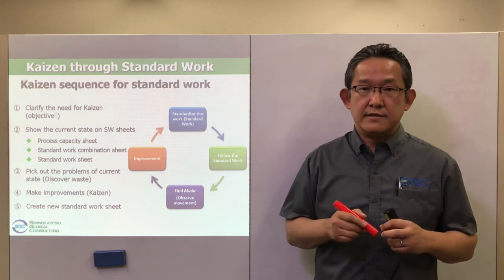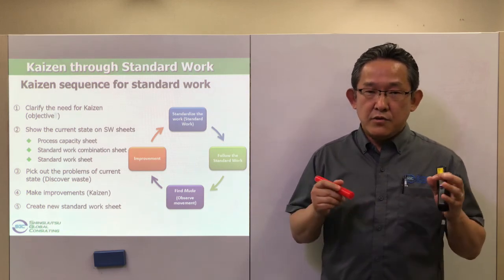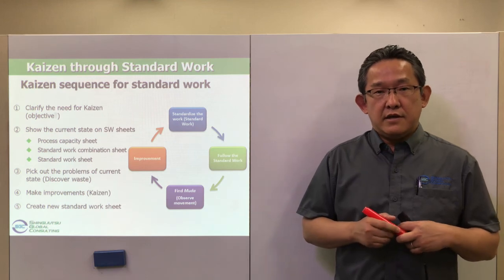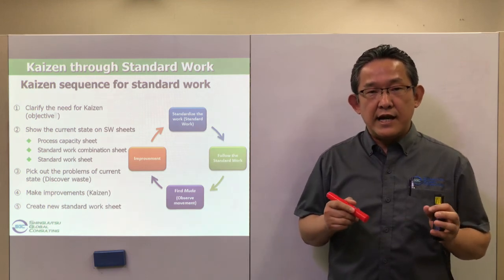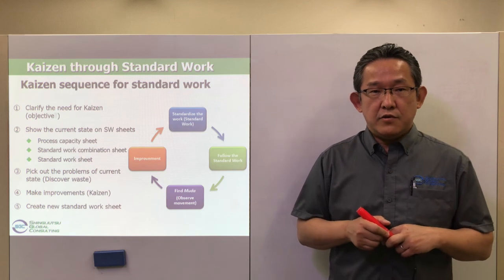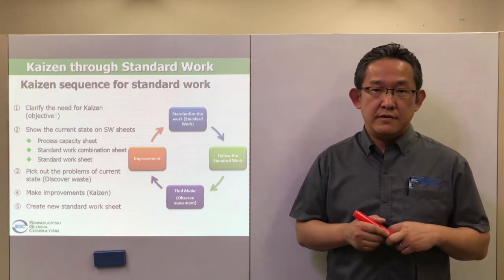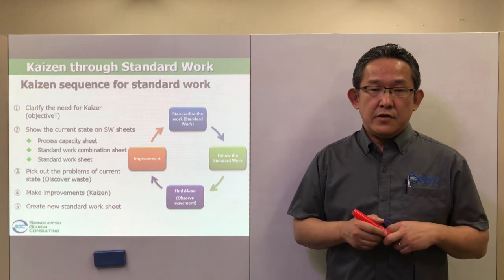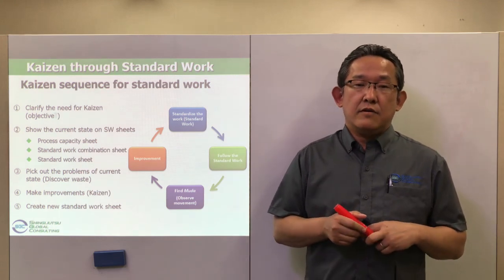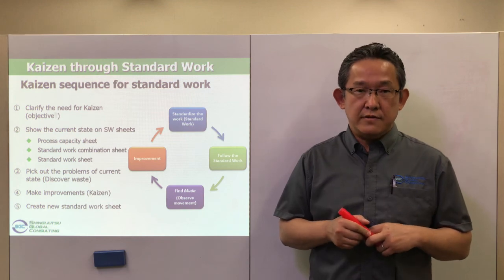It is important to set the standard first. Once you set a standard, the next steps for kaizen can be seen. If you decide the standard, you can judge whether the work is normal or abnormal. Let's work on kaizen in this spirit: where there is no standard, there can be no kaizen.